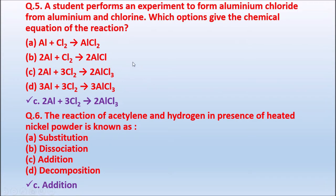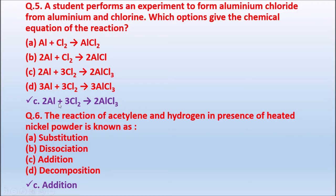Question 5: A student performs an experiment to form aluminum chloride from aluminum and chlorine. Which option gives the correct chemical equation? Option A: Al + Cl₂ → AlCl₂. Option B: 2Al + Cl₂ → 2AlCl. Option C: 2Al + 3Cl₂ → 2AlCl₃. Option D: 3Al + 3Cl₂ → 3AlCl₃. When aluminum reacts with chlorine it gives AlCl₃. The correct option is C: 2Al + 3Cl₂ → 2AlCl₃, which is the balanced equation.